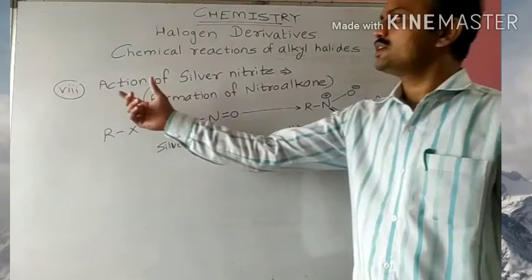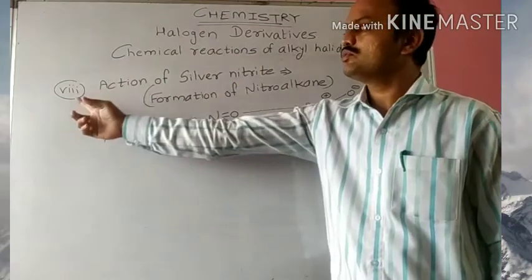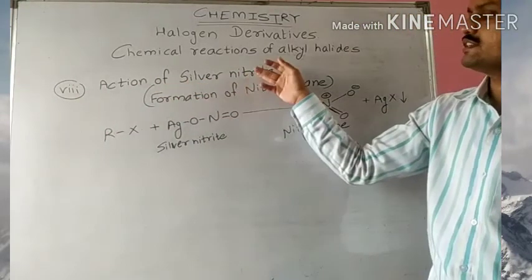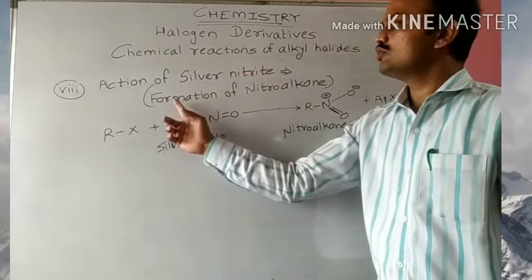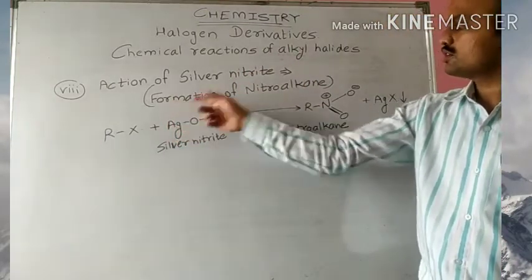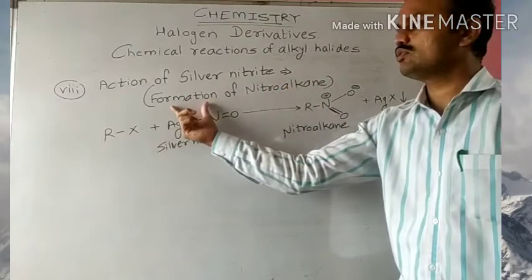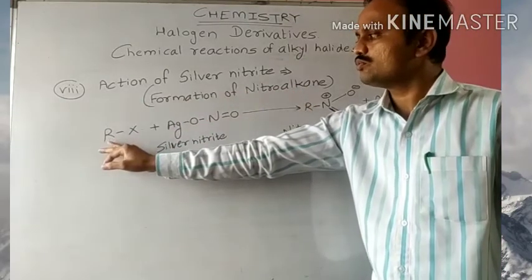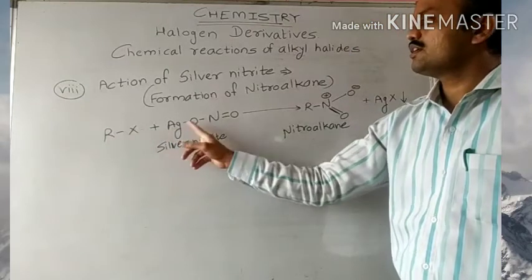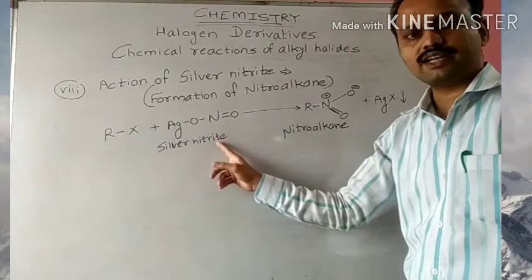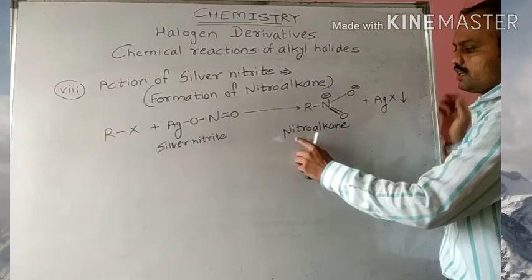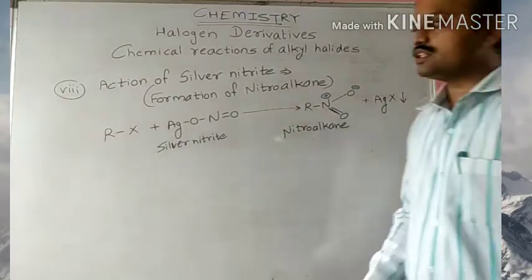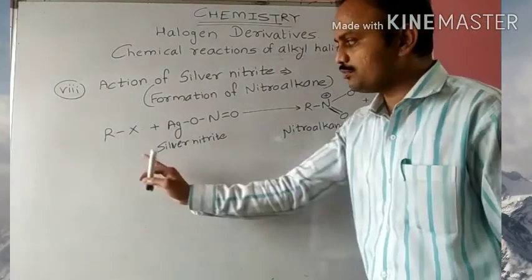In this property of alkyl halides, we will see the action of silver nitrite — AgNO₂. In this reaction, we will get the product as nitroalkane. Therefore, this reaction is also called formation of nitroalkane. The general reaction is: RX plus AG-O-N-O, that is silver nitrite, gives nitroalkane as the product plus AgX in the form of precipitate.